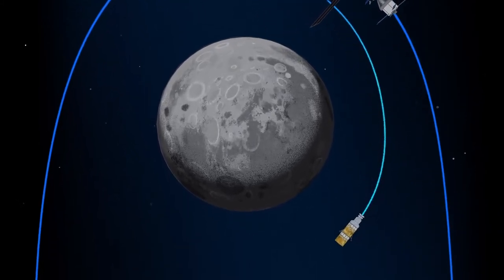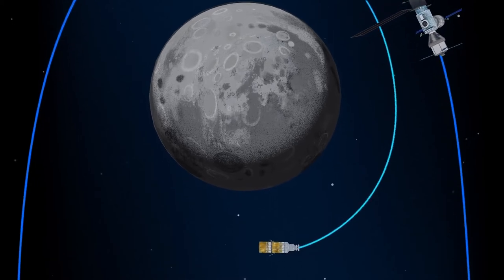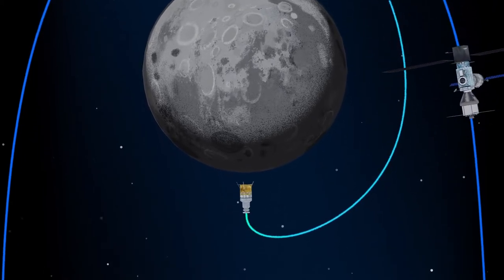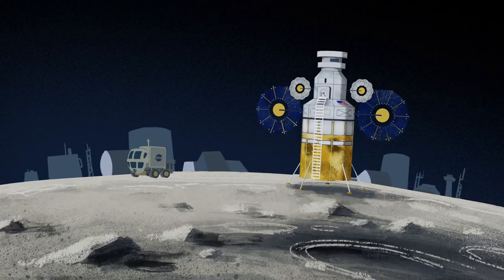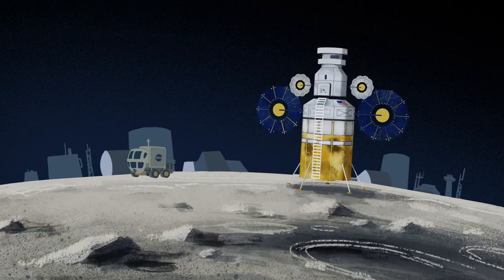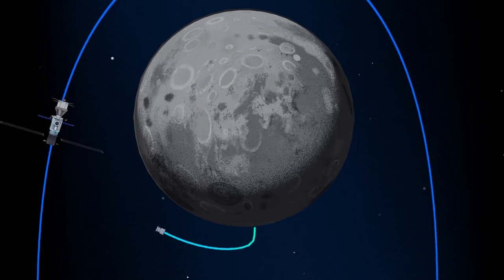The lunar lander system itself is built for three unique steps. Descending from the halo orbit of Gateway down to a low lunar orbit. Descending from low lunar orbit to the surface. And once the lunar mission is complete, launching from the surface of the Moon and ascending all the way back to the orbiting Gateway.